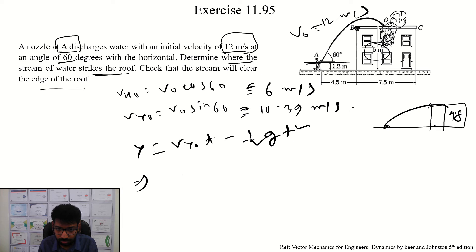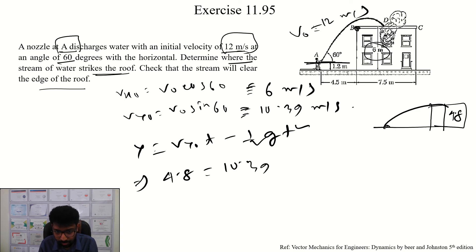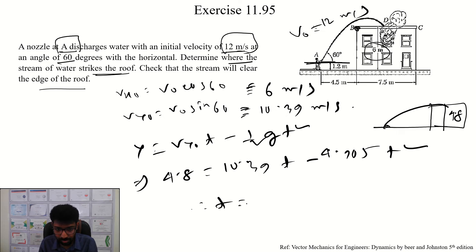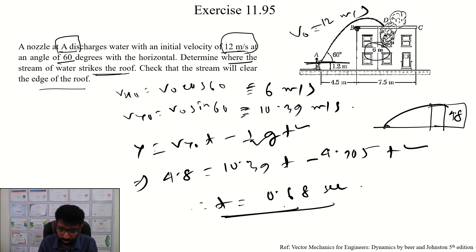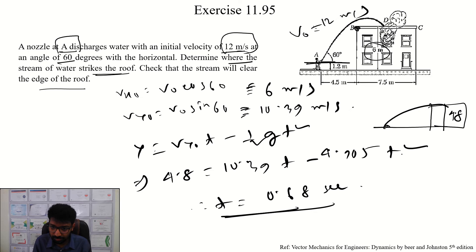y is equal to 4.8. Vy0 is equal to 10.39. t is equal to 9.81, then t equals 4.905, t equals 0.68. Solving further, t equals 4.47 and t equals 1.437.